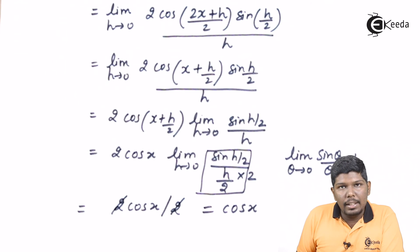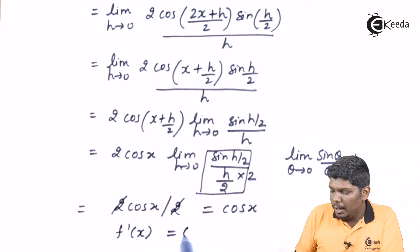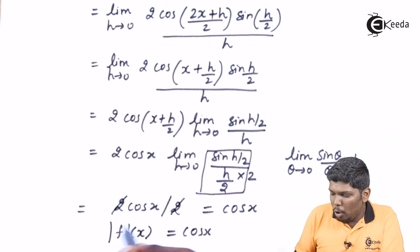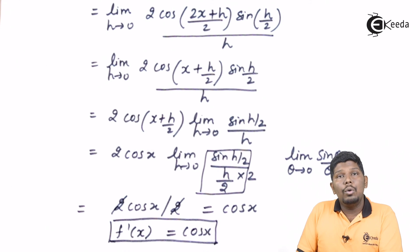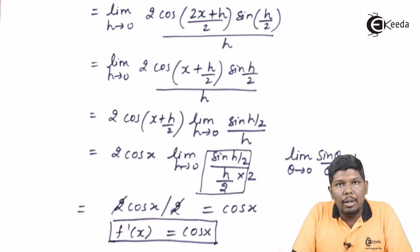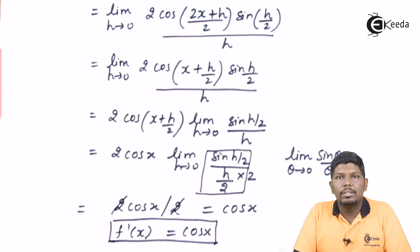The final answer is cos X. This means the derivative of the function sine X is nothing but cos X. I hope you have understood this video of how to find the derivative of sine X using the first principle.